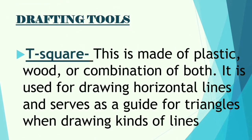Let's go through them one by one. First is the T-square. This is made of plastic, wood, or a combination of both. It is used for drawing horizontal lines and serves as a guide for triangles in drawing various kinds of lines.